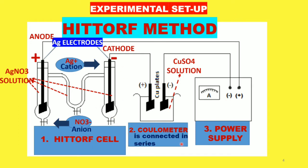A coulometer — for example, a copper coulometer or silver coulometer — is connected in series with the Hittorf electrolytic cell. The third component, the power supply, is used to carry out the electrolysis.